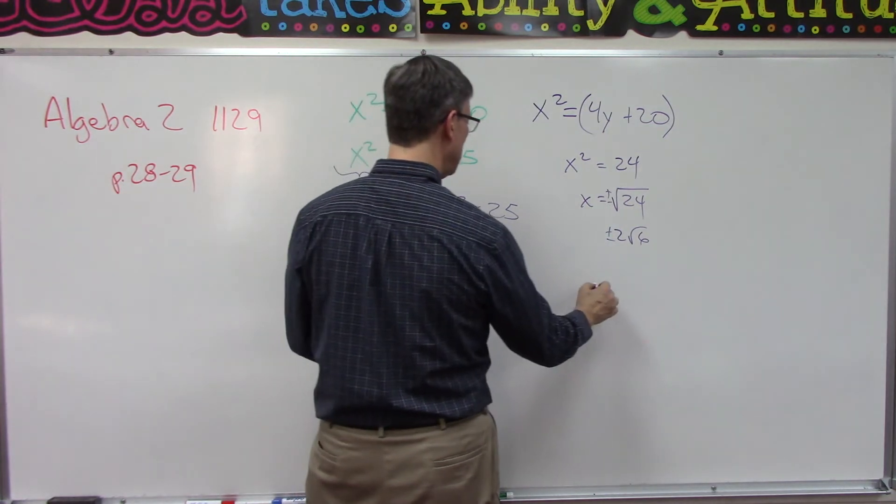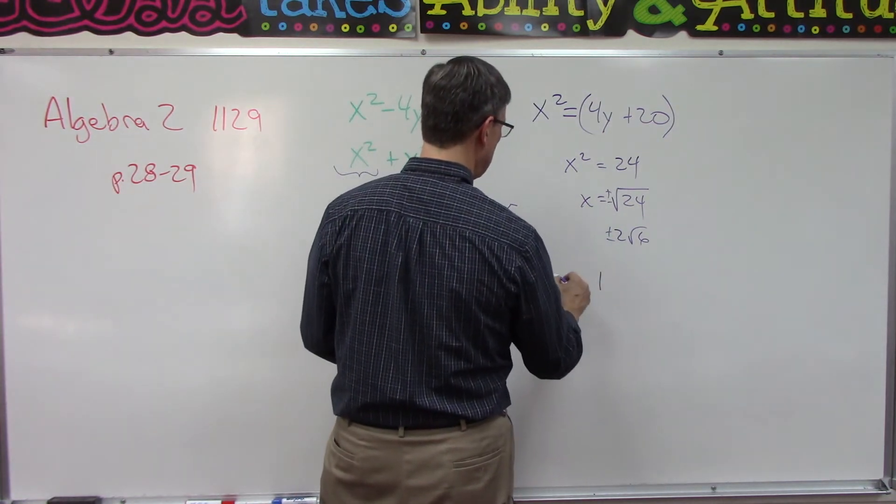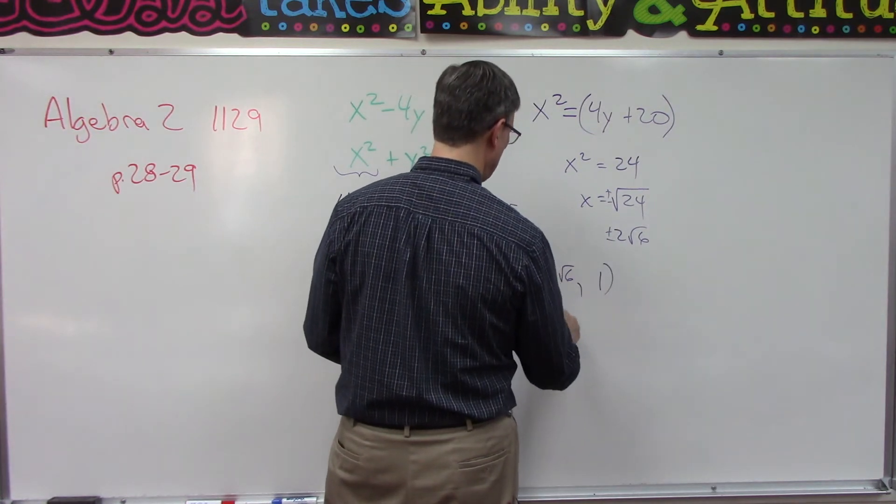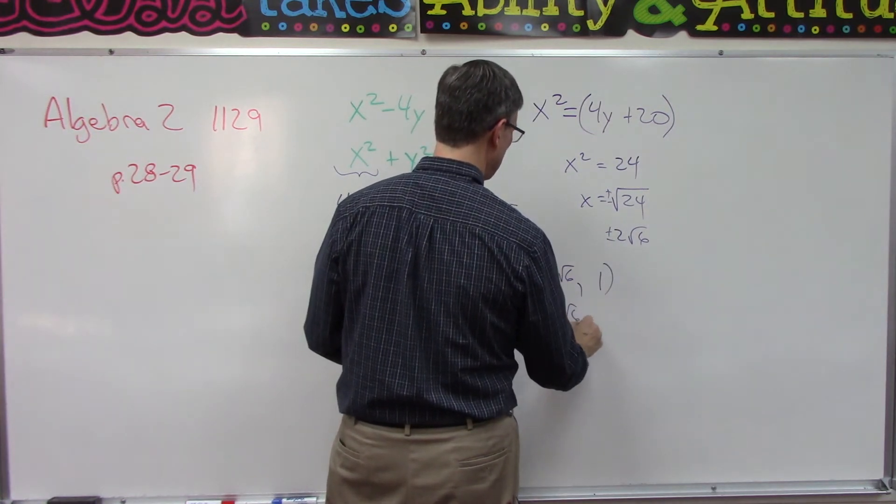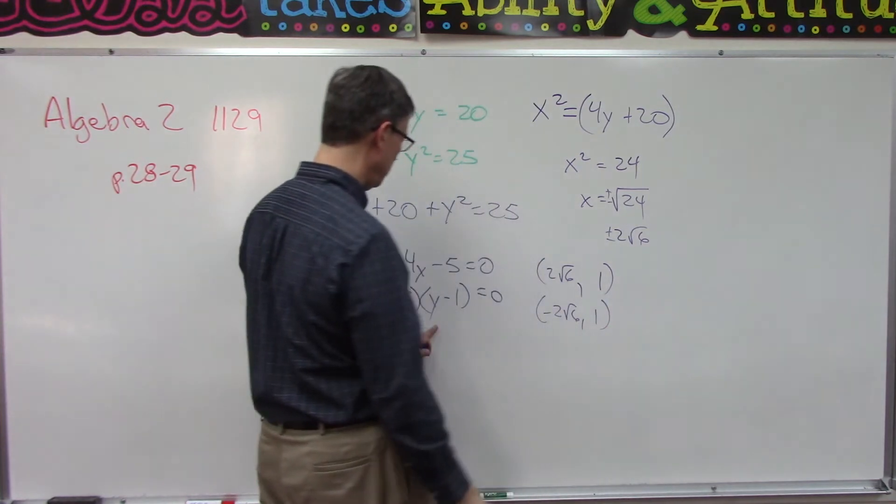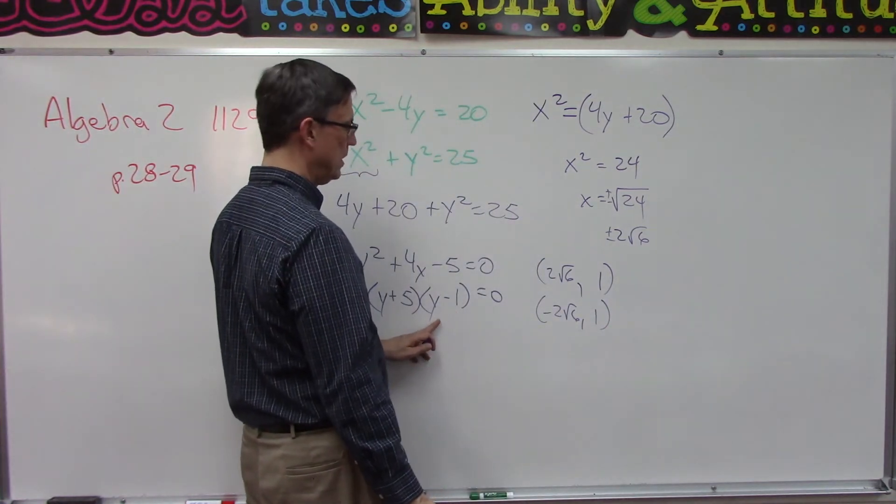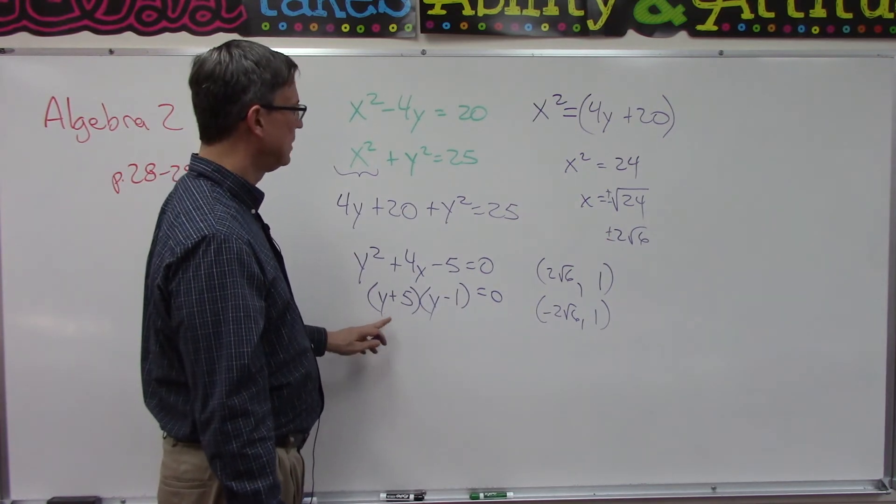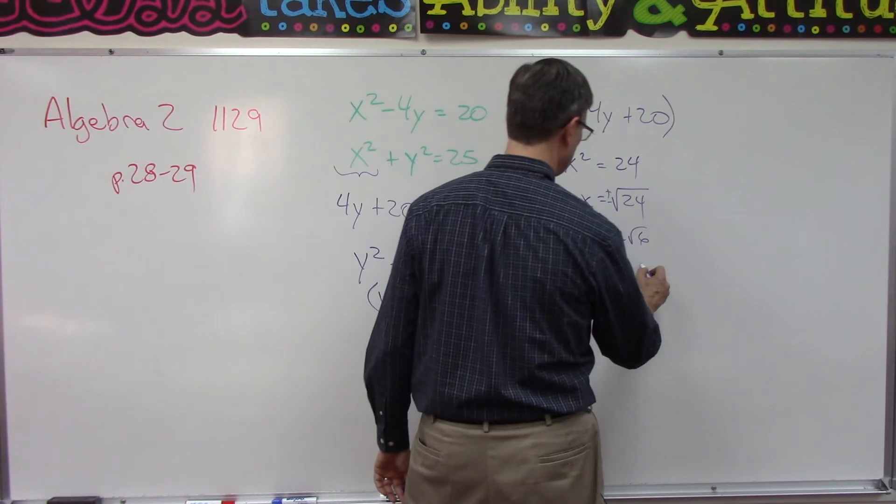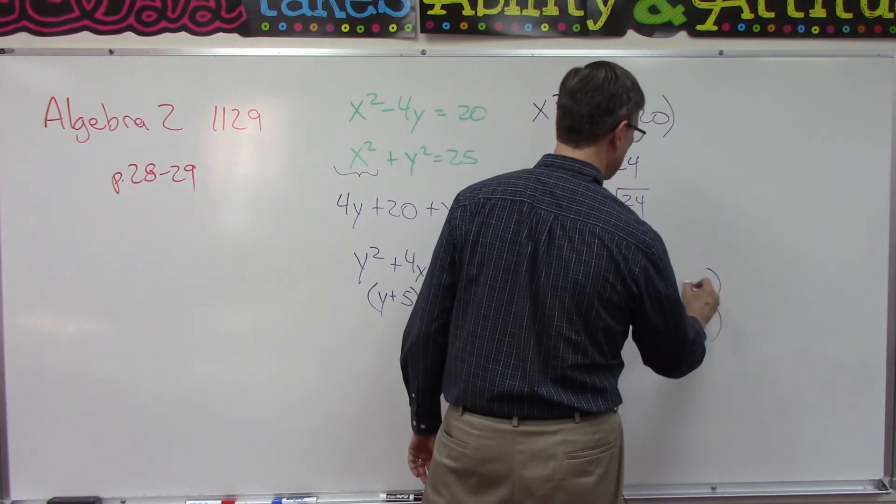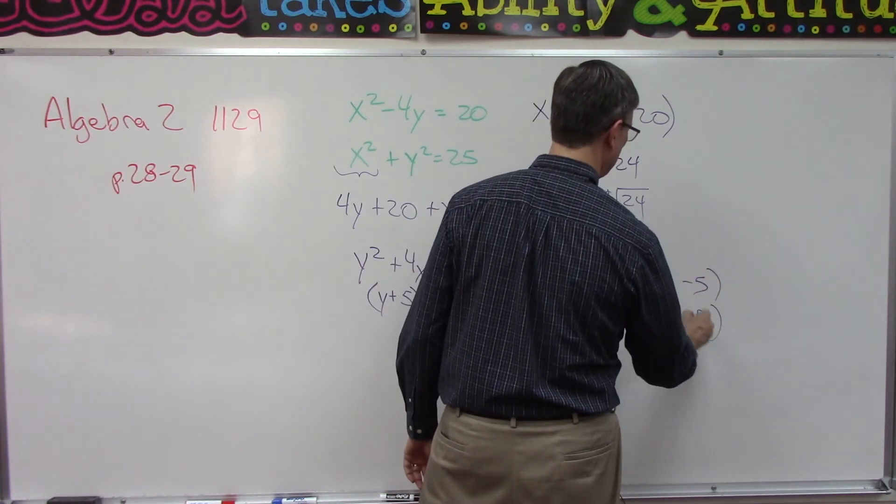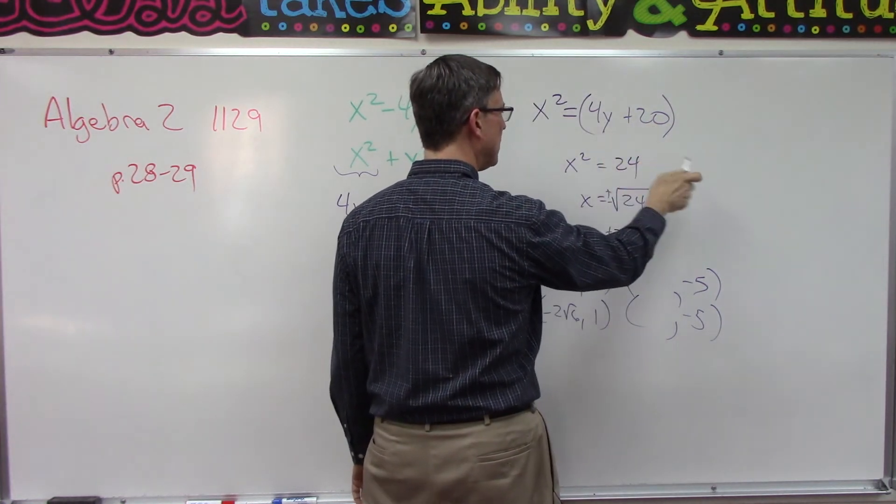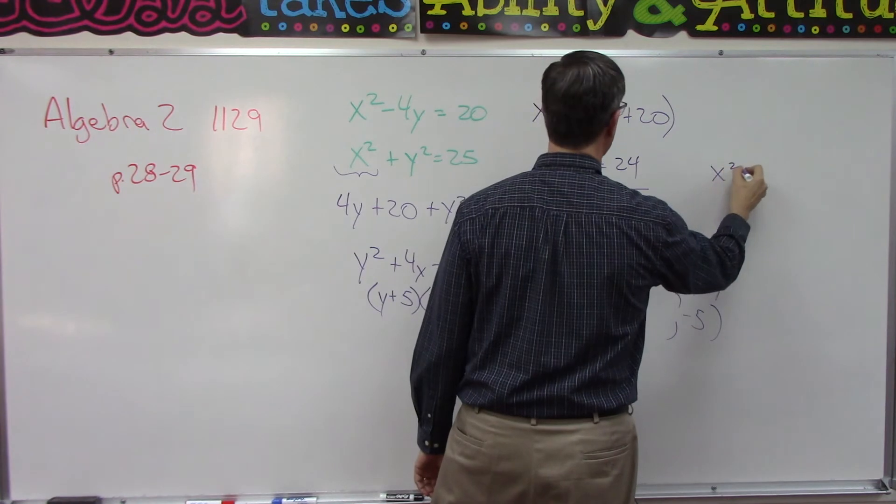Okay, and that was the x values. So when y was one, x was two square root of six, and I also have negative two square root of six corresponding to the one. And then over here when you solve for y we had negative five.